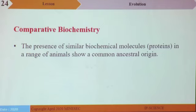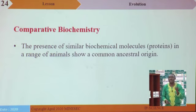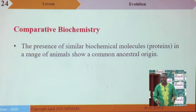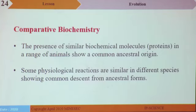Comparative biochemistry: the presence of similar biochemical molecules in a range of animals shows a common ancestral origin. All living organisms have the same 20 amino acids and the same 5 nitrogenous bases — whether bacteria, fungi, plants, or animals — meaning there is descent from a common ancestor. Some physiological reactions are similar in different species showing common descent. The respiration reaction — glycolysis, Krebs cycle — occurs the same way in a cat, humans, a rat, and a mosquito.